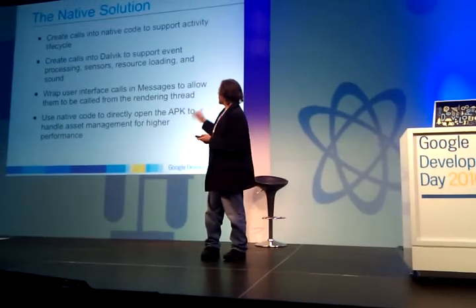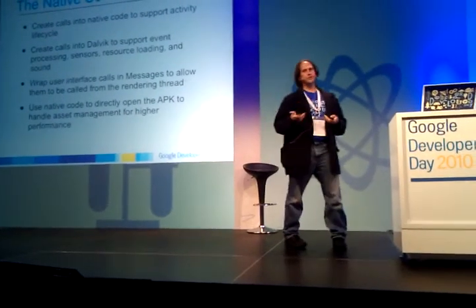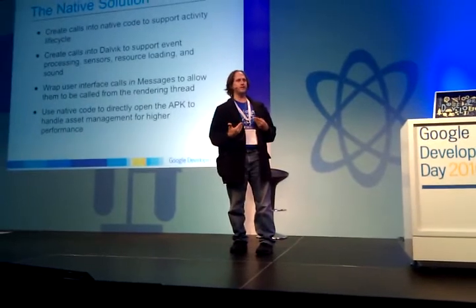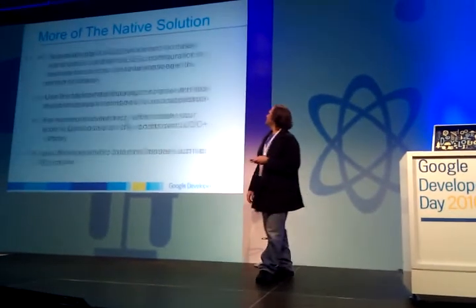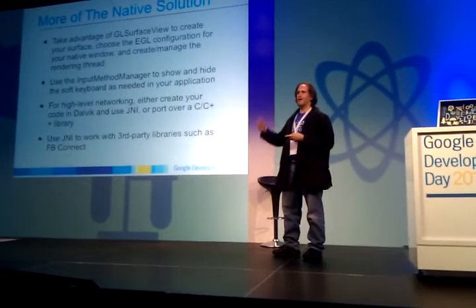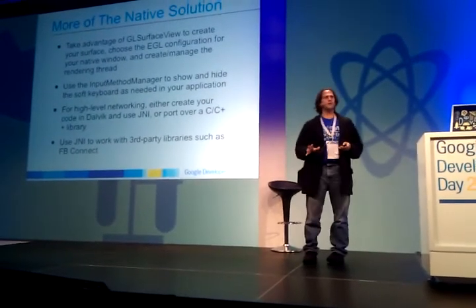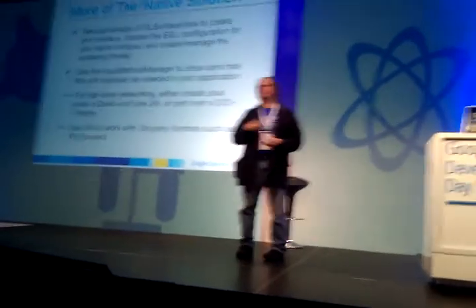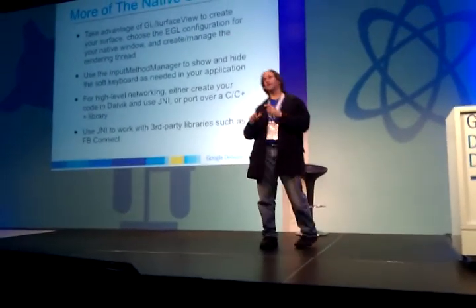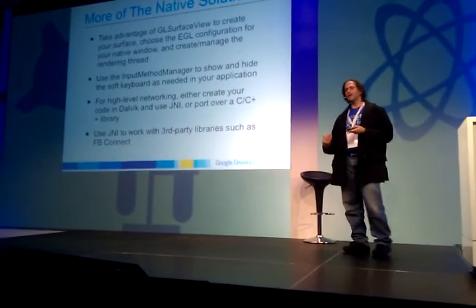For asset management, a lot of people say they want to get to their PNG files without having to call from Java. The answer is you can kind of do it — I talked to the head framework engineer on Android about the best way to do that, and she came up with a solution I'll go into later. Take advantage of the GLSurfaceView — you don't have to, but you might as well, because it handles a lot of the EGL setup for you to get your native window ready. Use InputMethodManager to show and hide the soft keyboard. A lot of people doing native apps implement their own soft keyboard, and it's just not cool. For high-level networking, you need to create your own code, or you can use JNI with a third-party library.